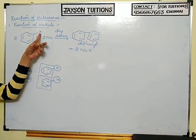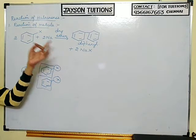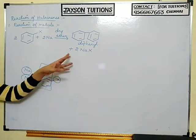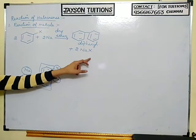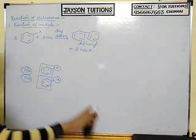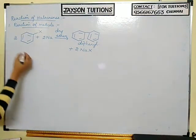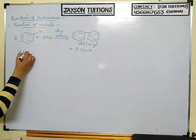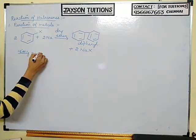The product is called diphenyl. X can be any halogen — chlorine, bromine, or iodine — so we get NaCl, NaBr, or NaI accordingly. This reaction is called the Fittig reaction.